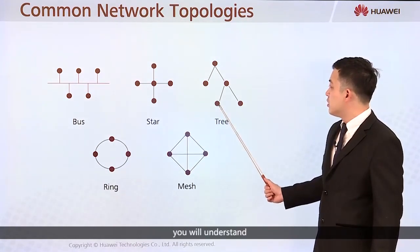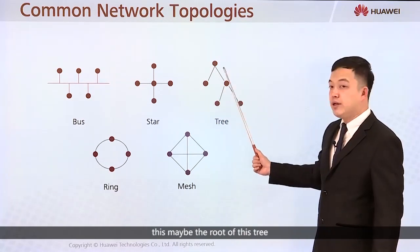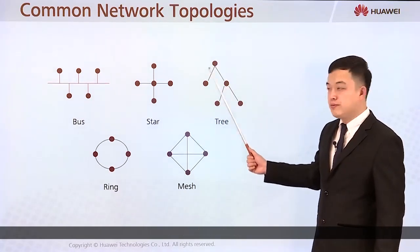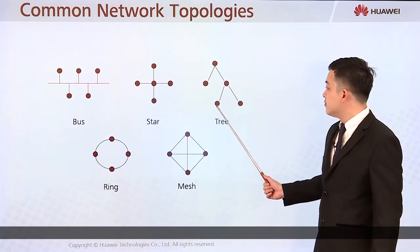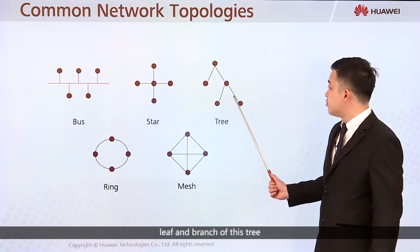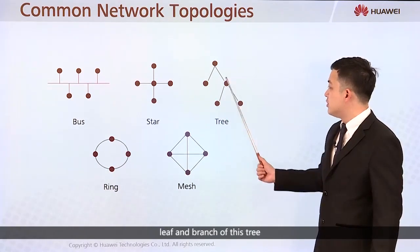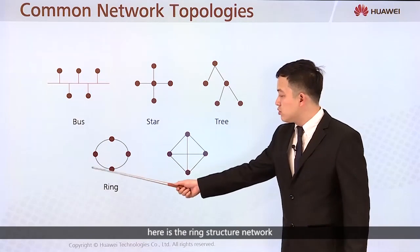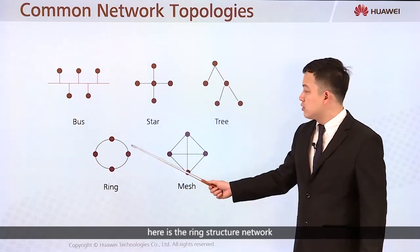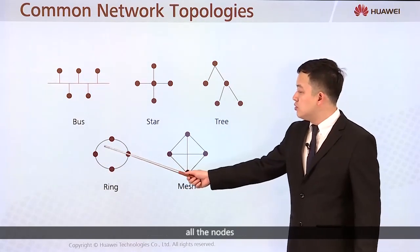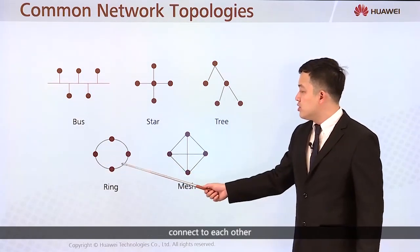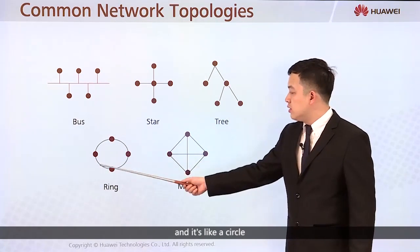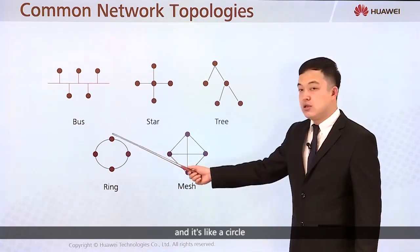In the tree topology, you can think of this as the root of the tree, and these are the leaves and branches. Next is the ring structure — in a ring network, all the nodes connect to each other and it forms a circle.